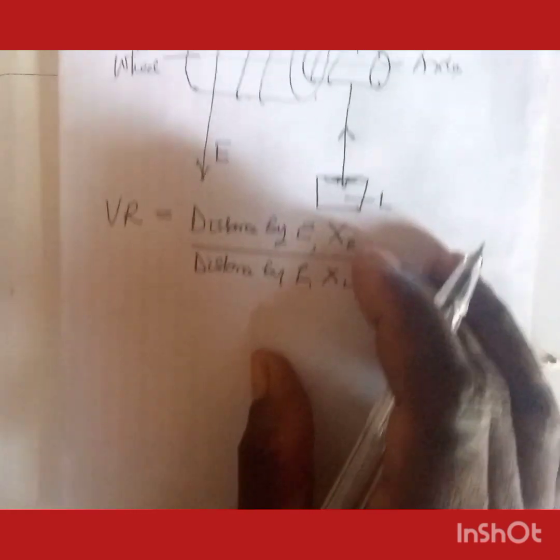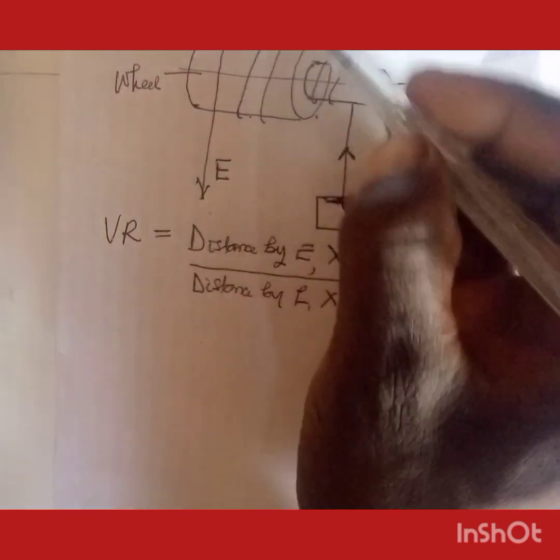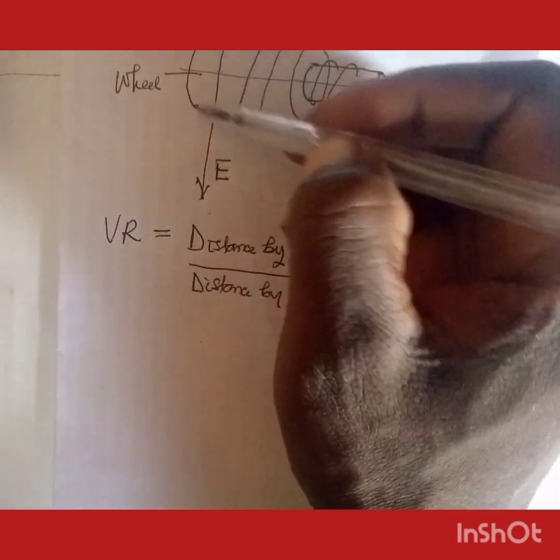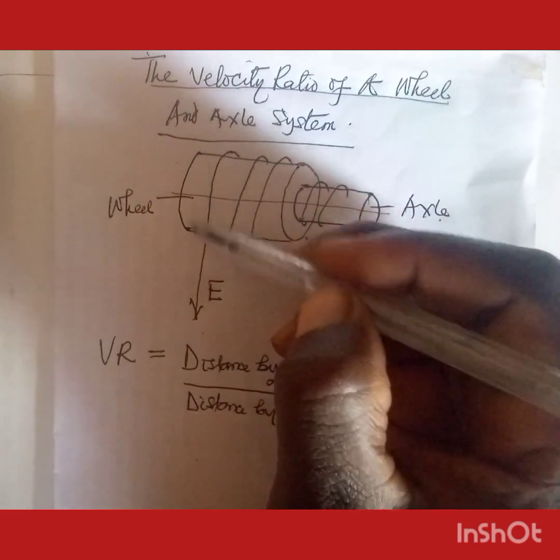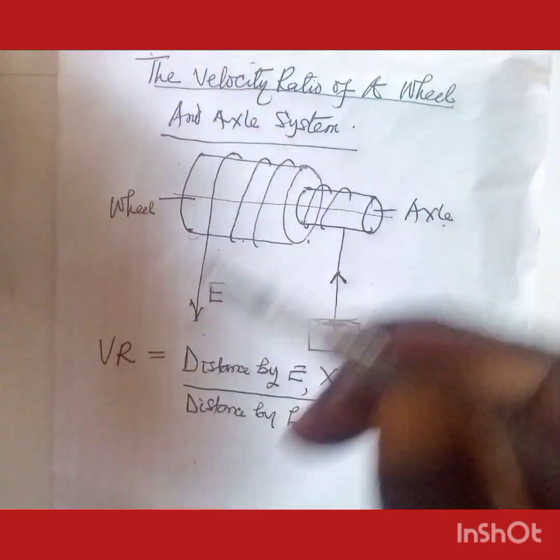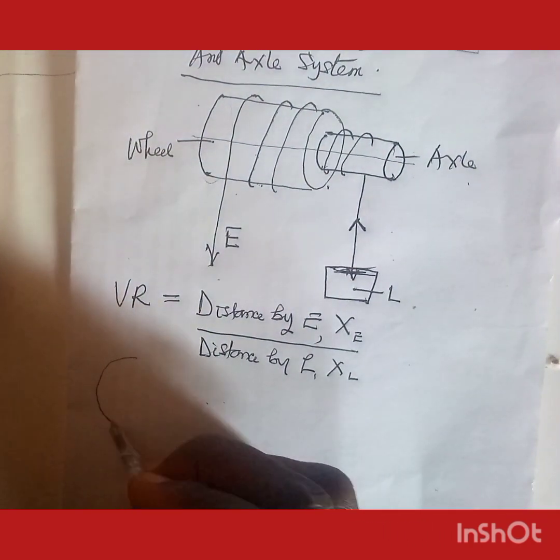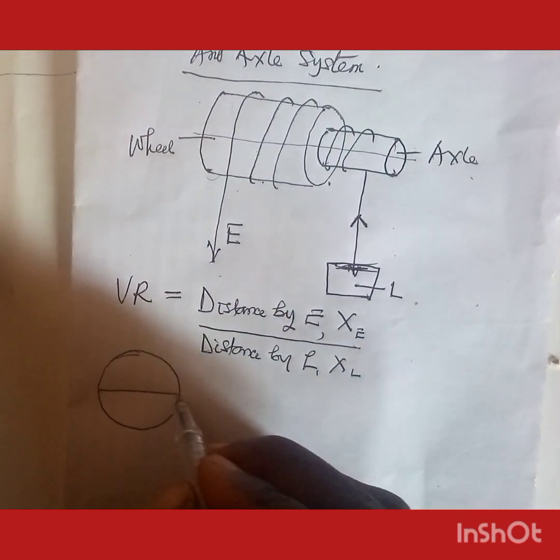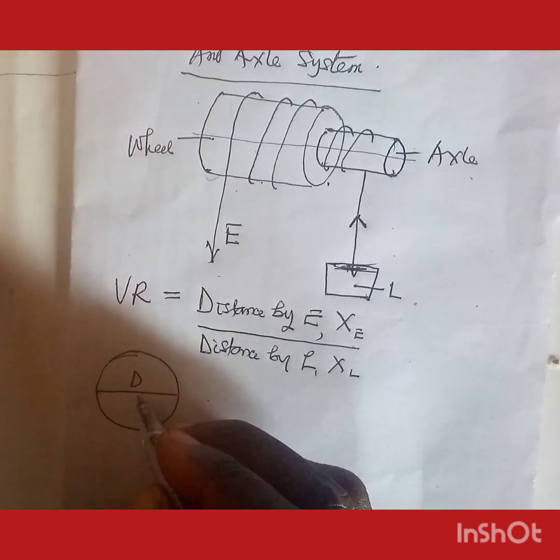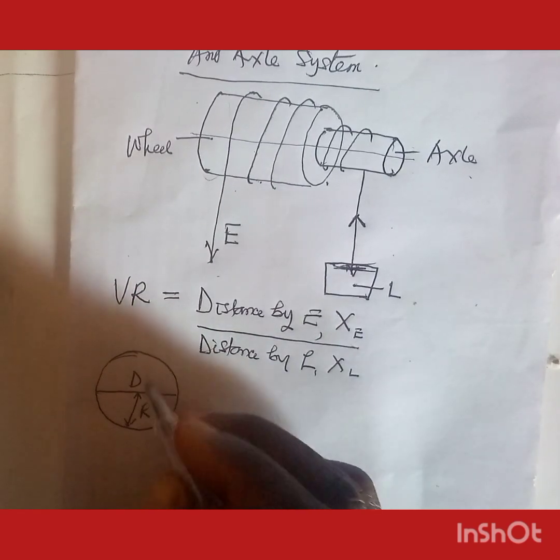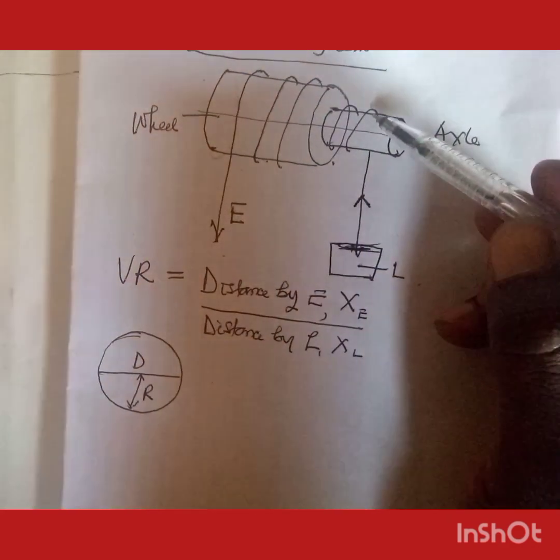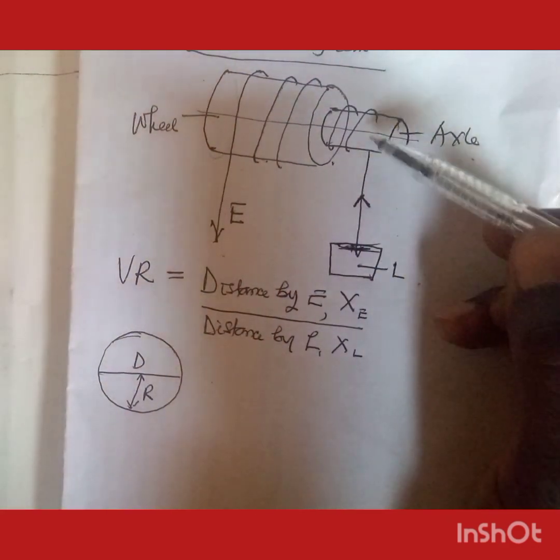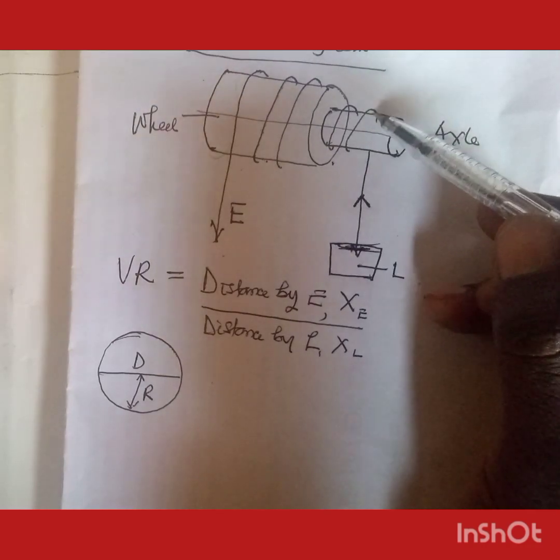The distance moved by the effort is the same as the distance around the circular surface of this cylindrical system. If we have the cross section of the wheel with diameter D and radius R, the distance moved by the effort equals the circumference of that cross section.